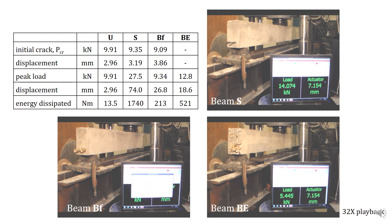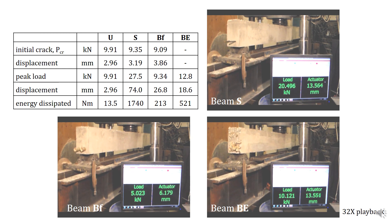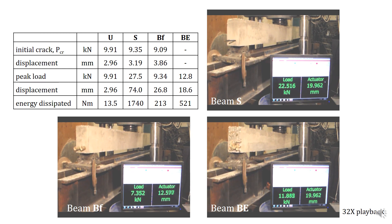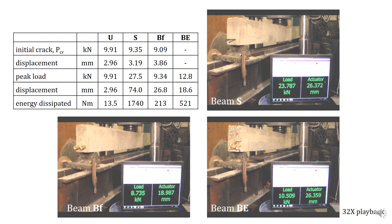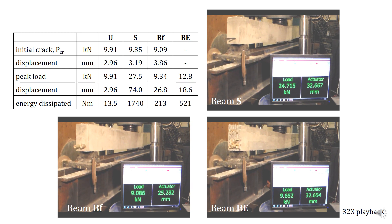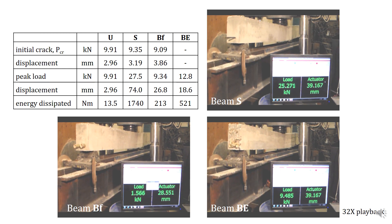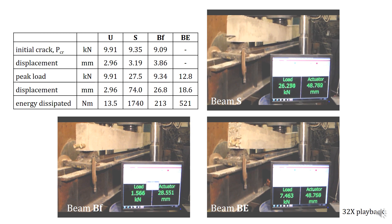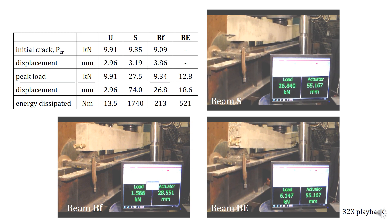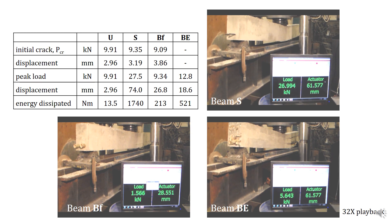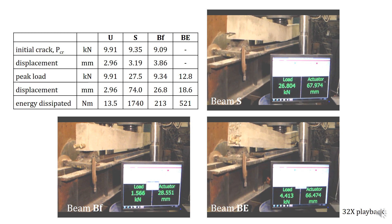Looking at the data from these tests, initial cracking of each beam is very similar, just under 10 kilonewtons applied load. The peak loads, on the other hand, are very different. The bamboo-reinforced concrete beams barely reach their cracking loads, whereas the steel-reinforced concrete beam, as one expects, achieves a considerably higher load and considerably greater displacement.